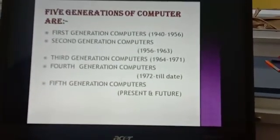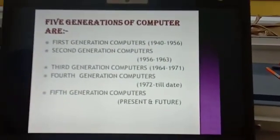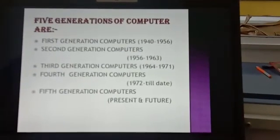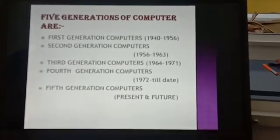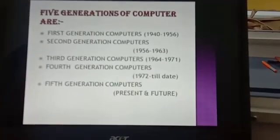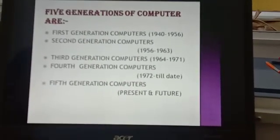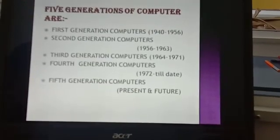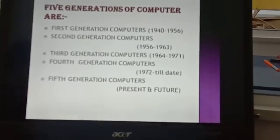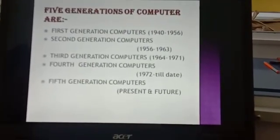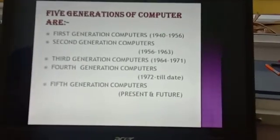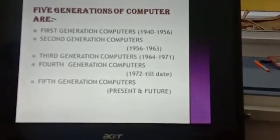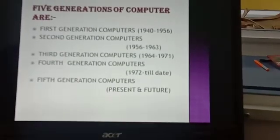Now let's have a look at the timeline of these five generations. First generation computers were invented in the 1940s and their time period lasted until 1956. Then came second generation computers, with a timeline from 1956 to 1963. Third generation computers started in 1964 and ended in 1971. Fourth generation computers were invented in 1972, and till date we are still working on fourth generation computers. Then we have the fifth generation of computers, which we are working on presently and will continue to work on in the future.